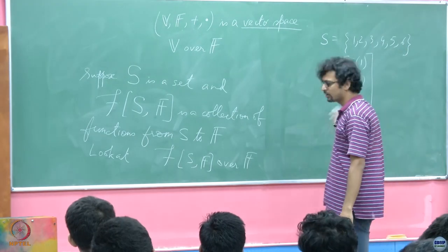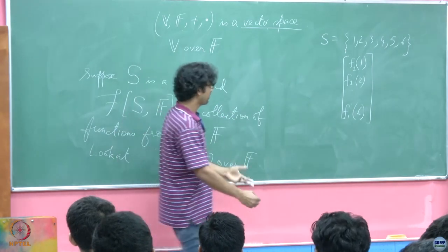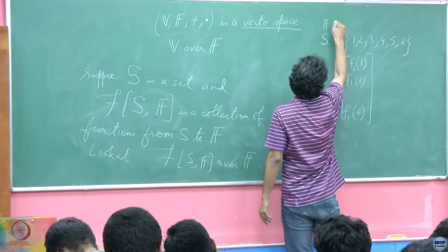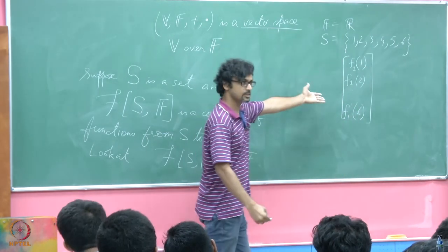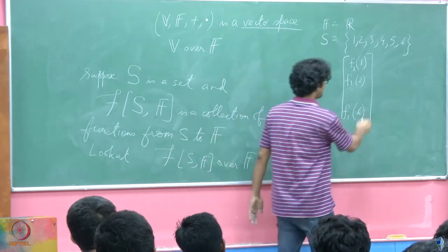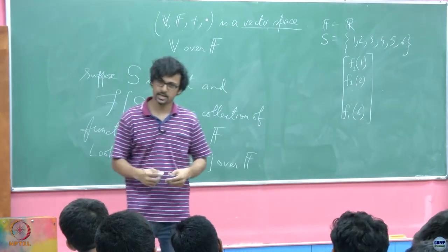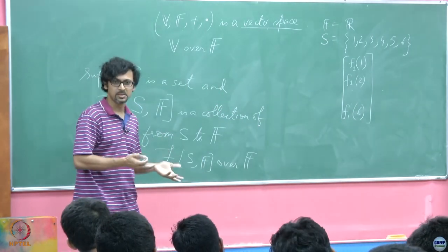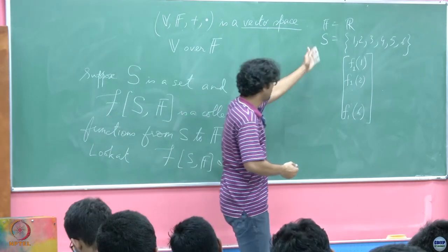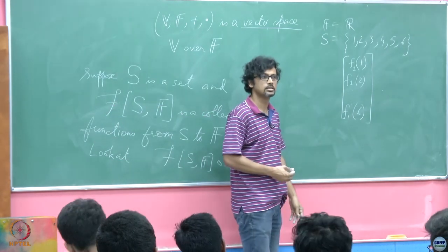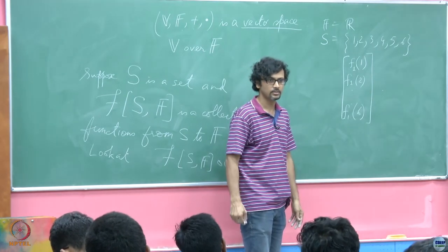You immediately see that this is analogous to R^6. If my field F is R, then this is nothing but very similar — a term we will come to know later as some isomorphism, a similarity in structure. This is very similar; it is just a column of 6 numbers. It is what you do in R^6.